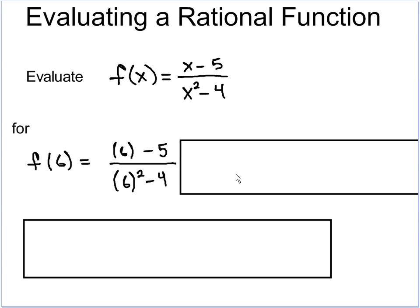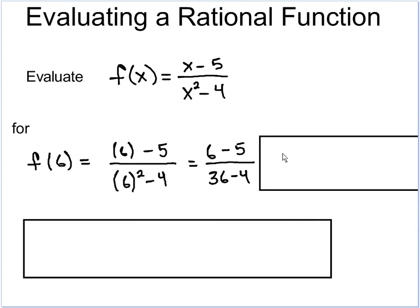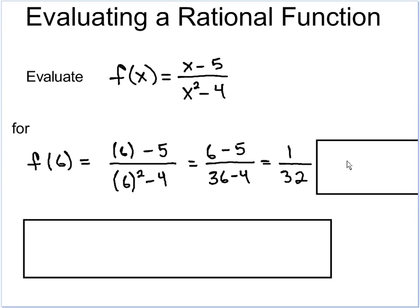So, now that we have our plug-in and our evaluation, we can actually solve it out. Get rid of our parentheses, so I have 6 minus 5 over 6 squared, which is 36 minus 4. Then I do the subtraction. I end up with 1 divided by 32. So, in the end, just a simple fraction.